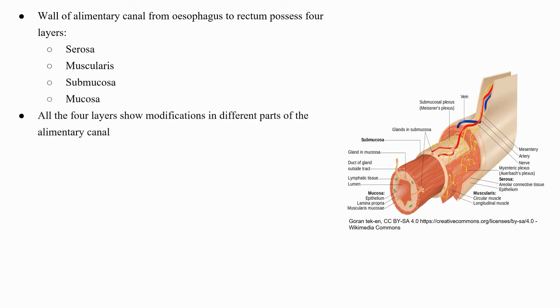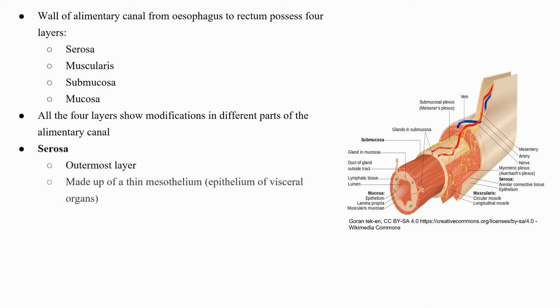The wall of the alimentary canal from esophagus to rectum possesses four layers: serosa, muscularis, submucosa, and mucosa. All four layers show modifications in different parts of the alimentary canal.